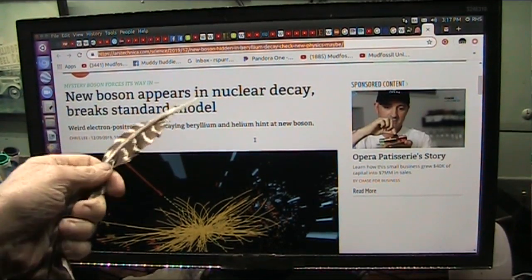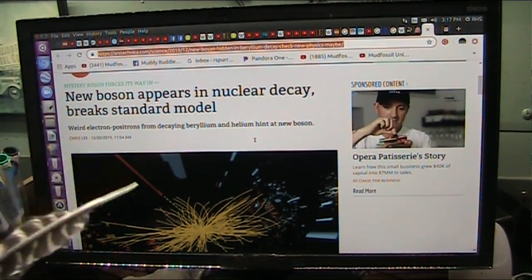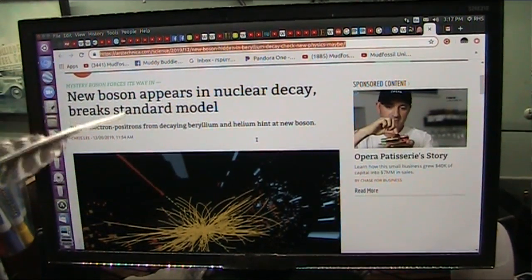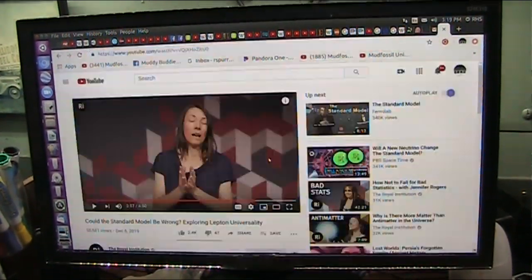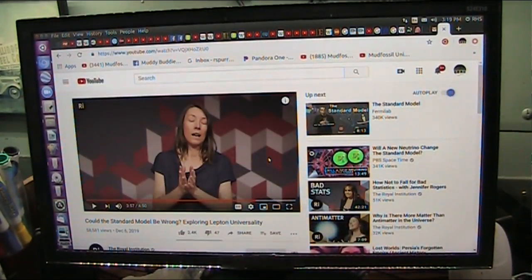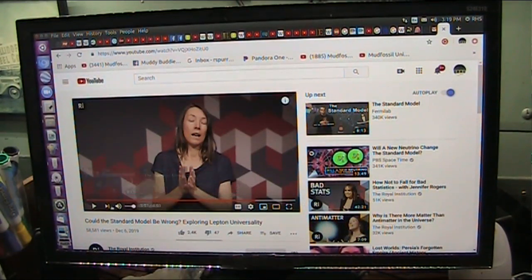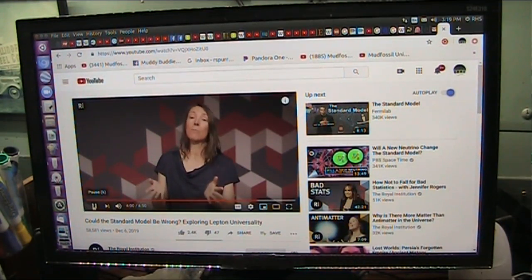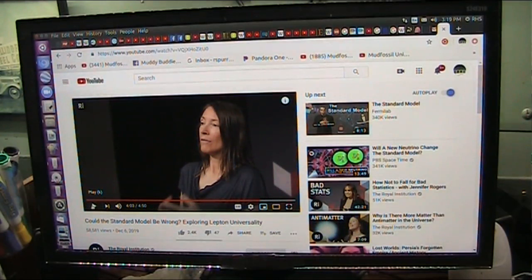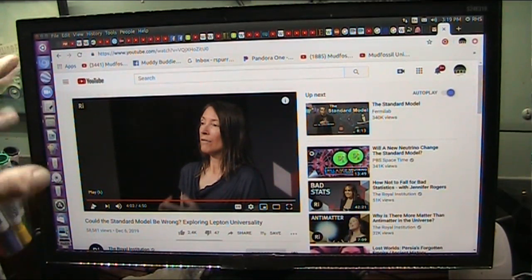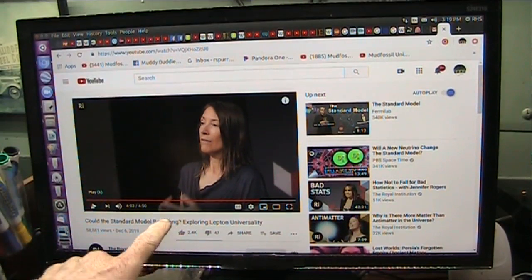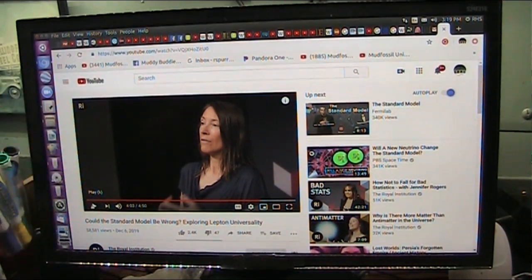So this is a new boson appears in nuclear decay breaks standard model. Here's what the Royal Academy had to say. This is the Royal Institution in London, and they're the authorities. There's absolutely no way that we can explain this observation with our current understanding. So anyway, she went on to why this is a problem, and it's because of leptons and the universality that they had built this model on, and it doesn't work.